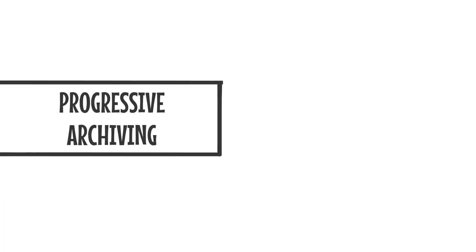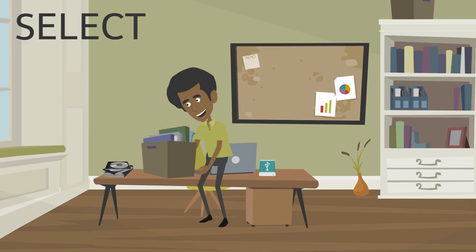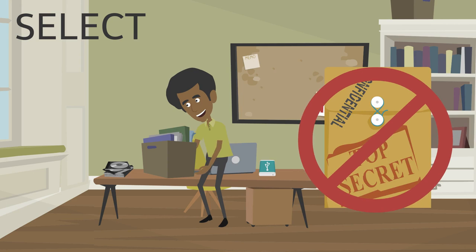Progressive archiving requires the depositor to do the following. Select. Select the data that you know you want to preserve from the beginning of a project. Do not select data that you know should not be accessed, such as sensitive or confidential materials.